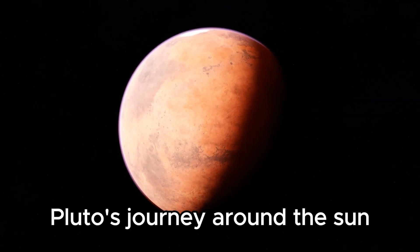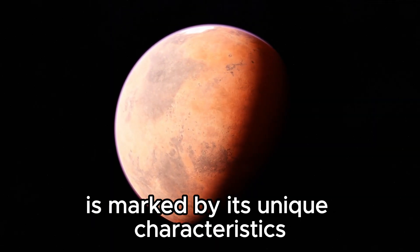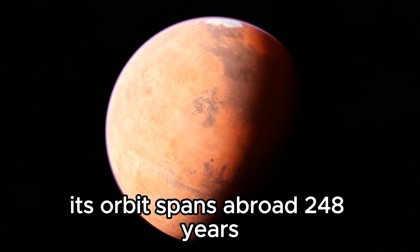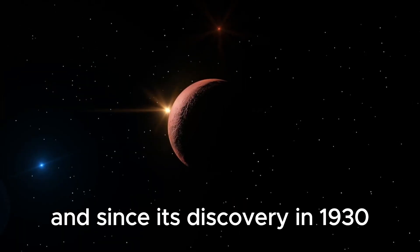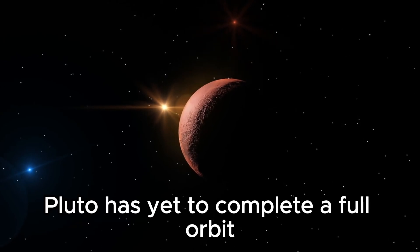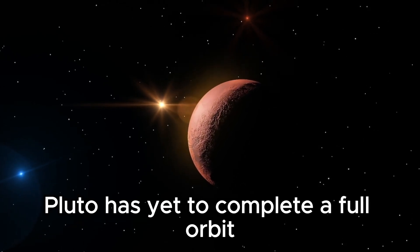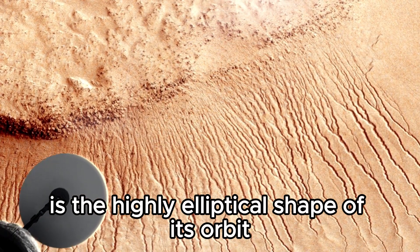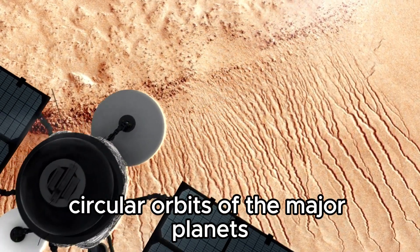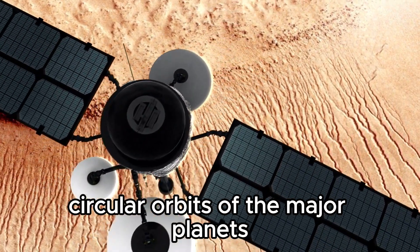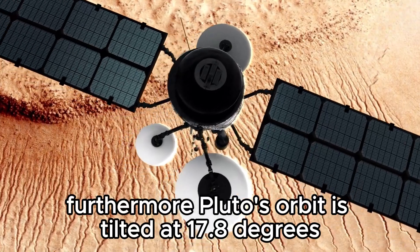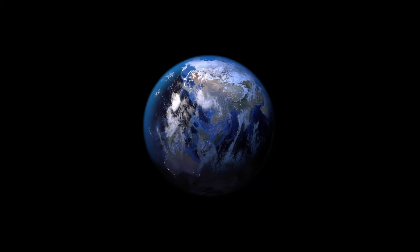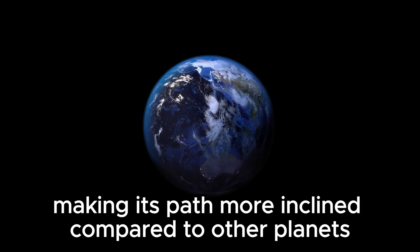Pluto's journey around the Sun is marked by its unique characteristics within our solar system. Its orbit spans a broad 248 years, and since its discovery in 1930, Pluto has yet to complete a full orbit. Adding to its intrigue is the highly elliptical shape of its orbit, a departure from the nearly circular orbits of the major planets. Furthermore, Pluto's orbit is tilted at 17.8 degrees to the ecliptic plane, making its path more inclined compared to other planets.